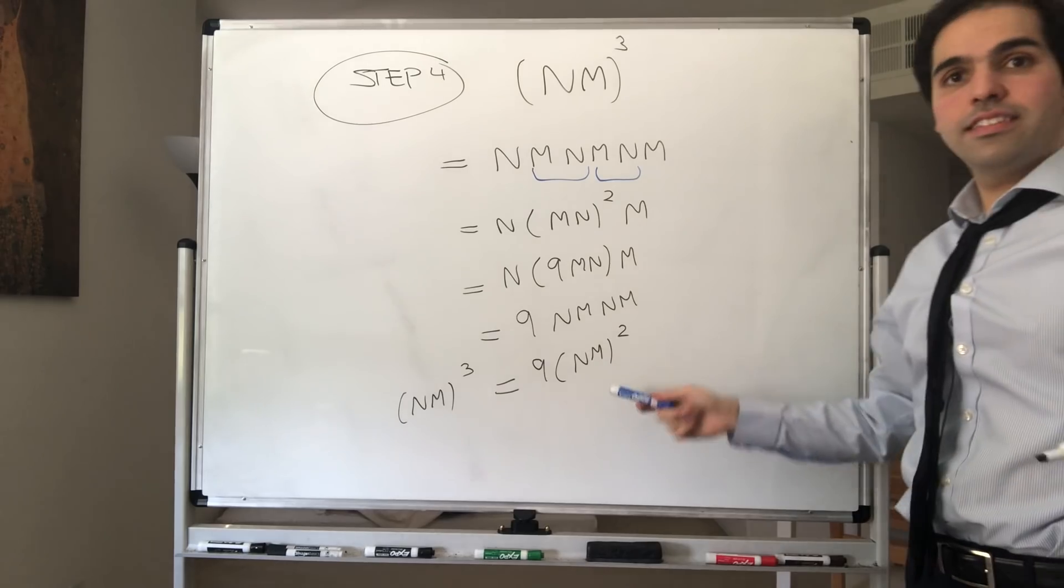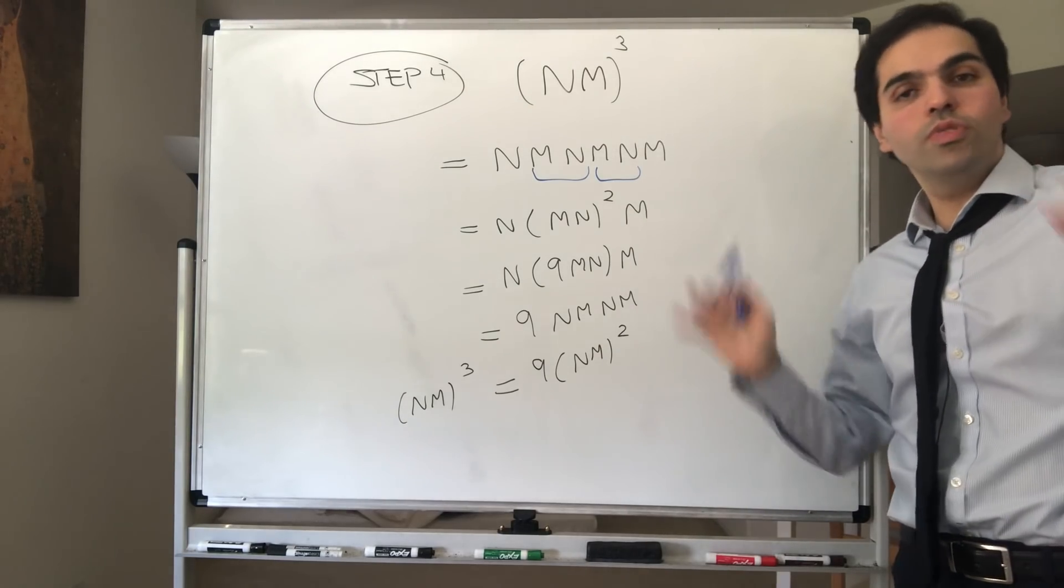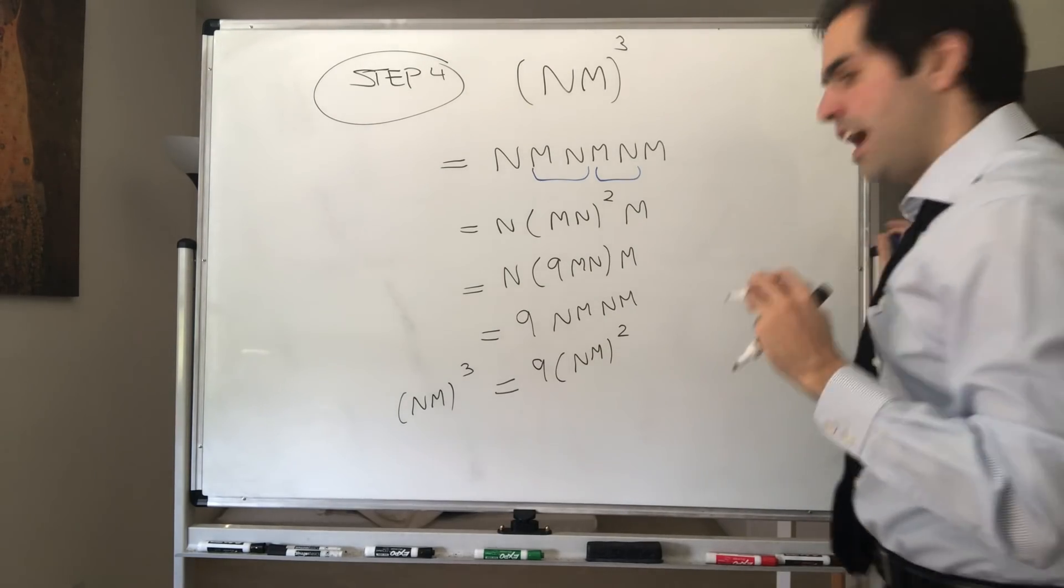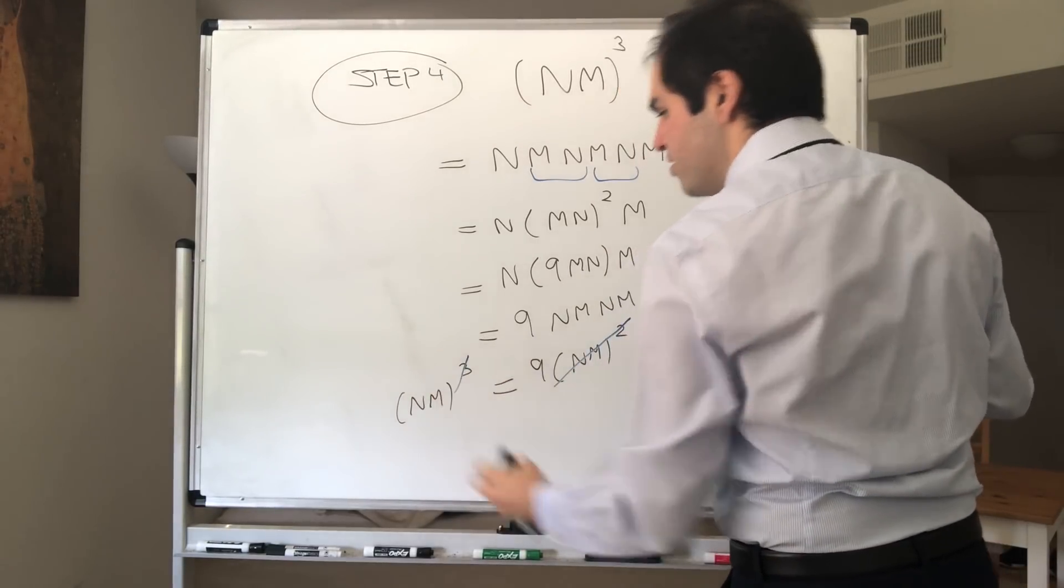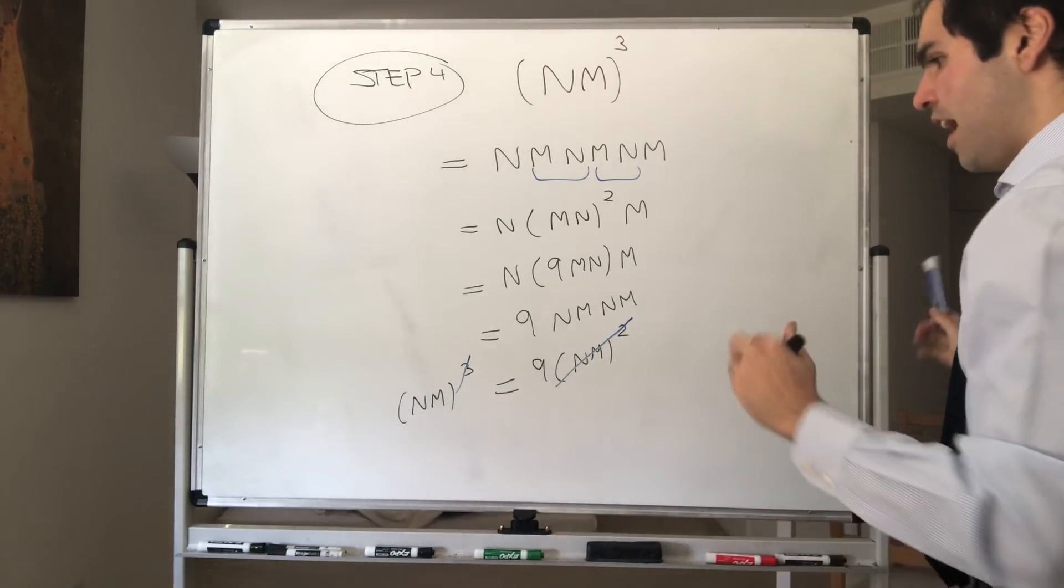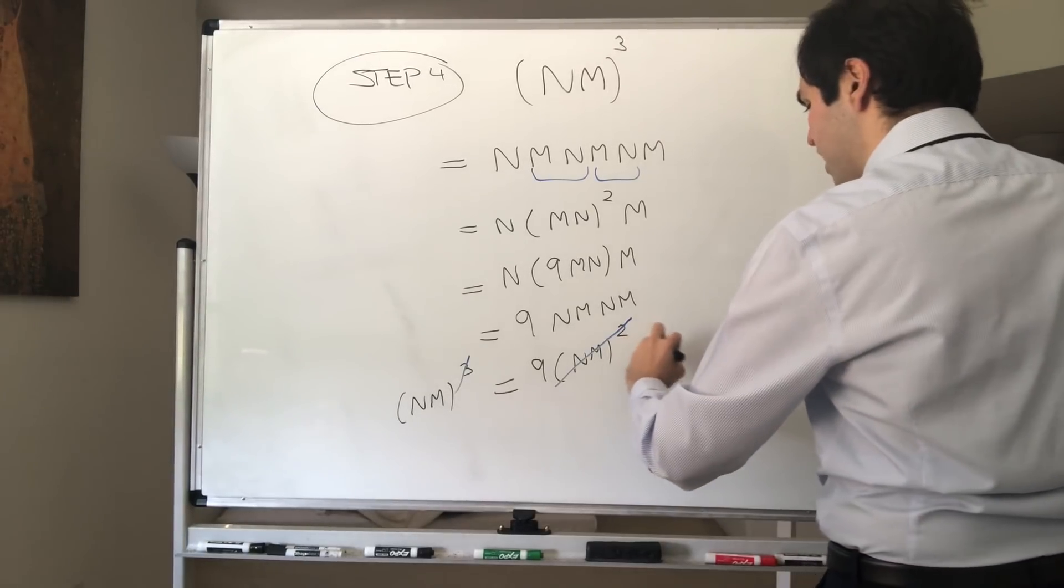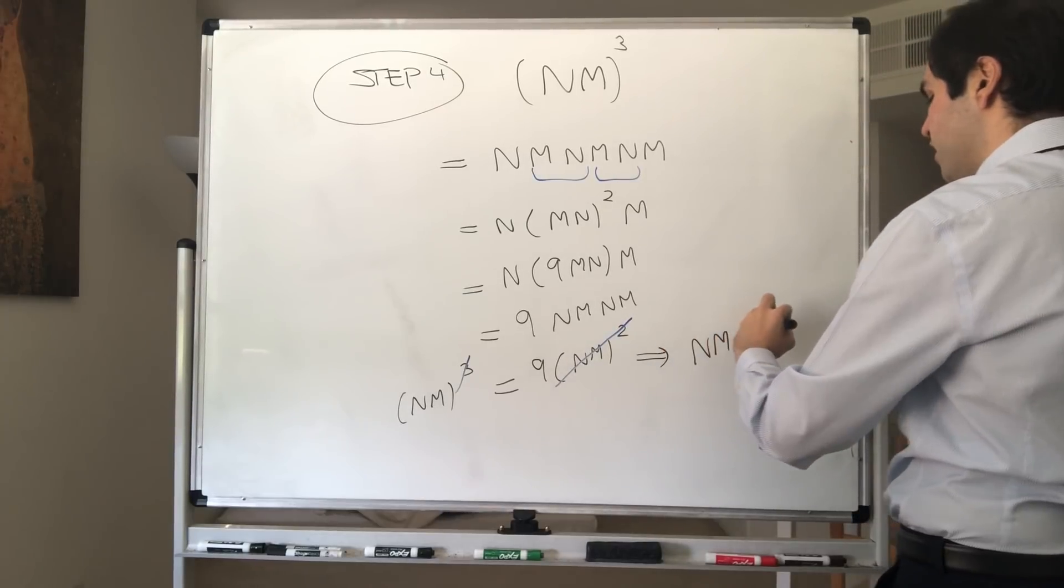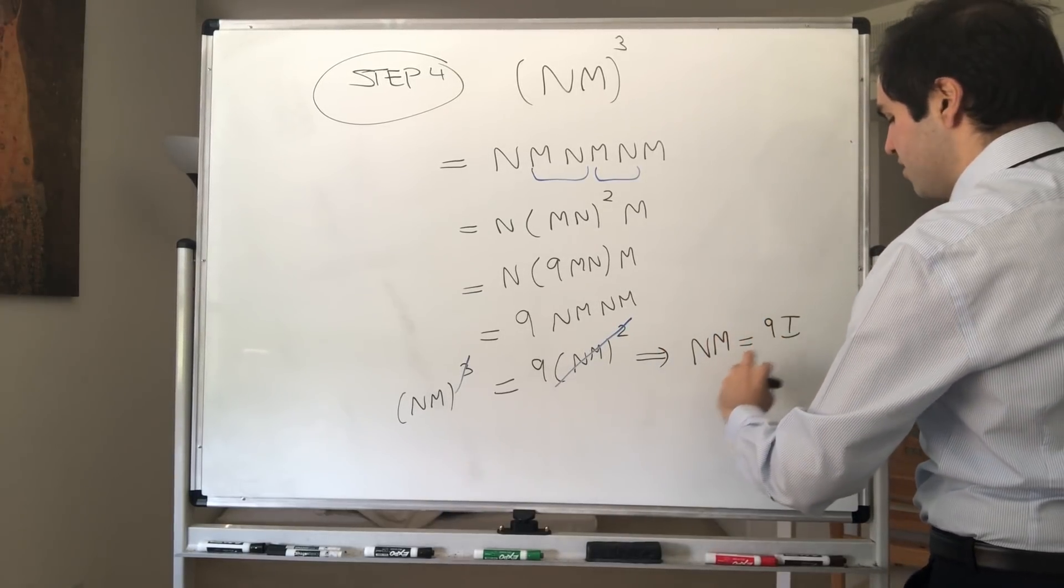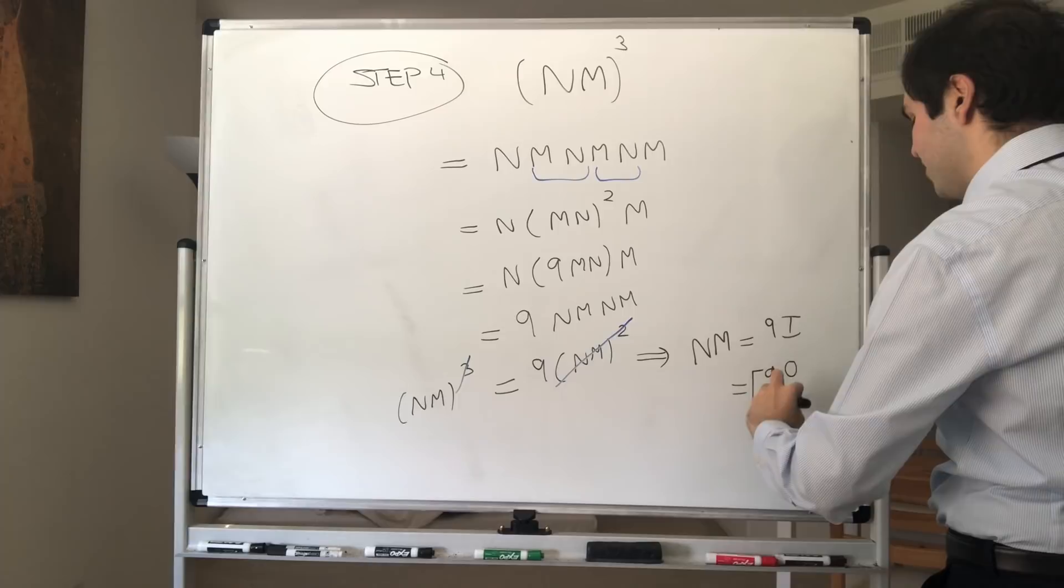But then, since NM is invertible, you can just treat it like regular numbers and cancel things out. So, this NM squared cancels out with one of those cubes. And, therefore, we just get our final result. NM equals 9 times the identity. And, that's 9, 0, 0, 9.